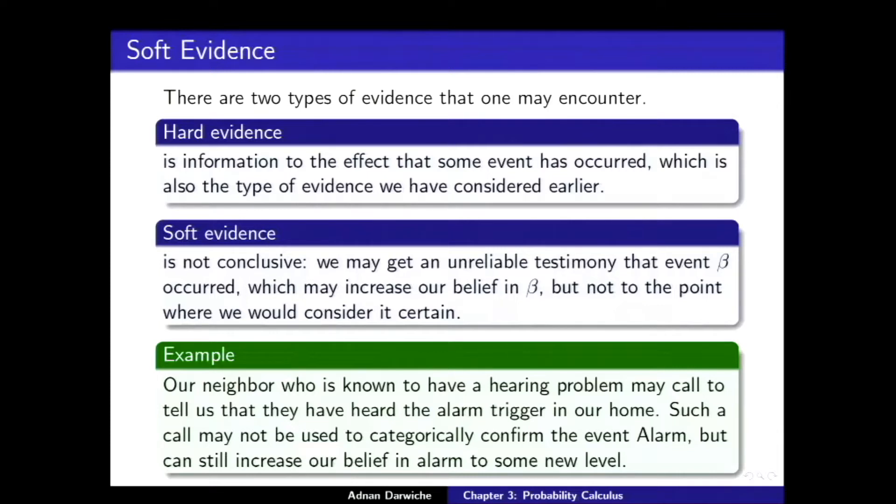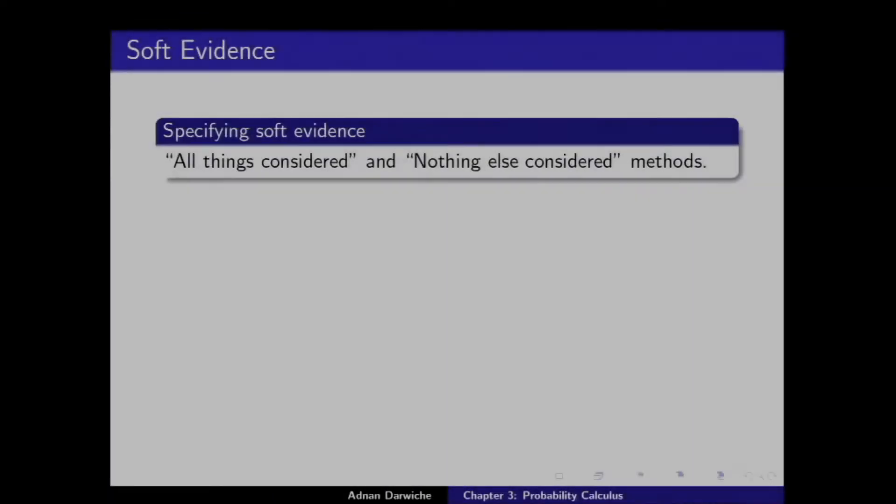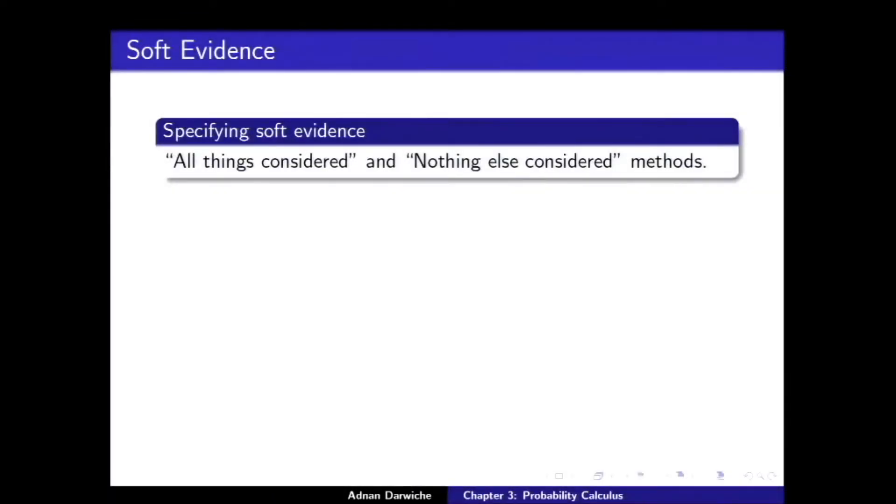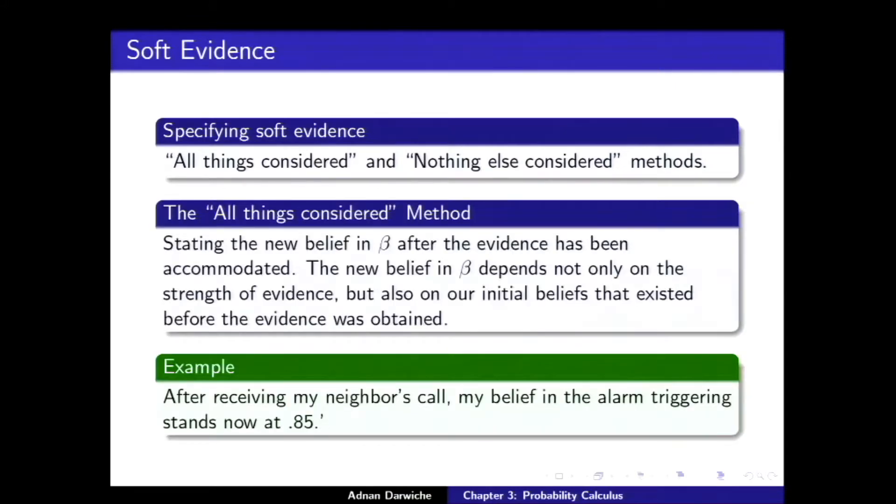So, here's soft evidence. And the two methods have their names. Actually, Udapur gave these two names to them. One of them is called All Things Considered and the Nothing Else Considered. All Things Considered is traditional. In his original book, he talked about the Nothing Else Considered. At that time, it was called Virtual Evidence Method. The treatment that we're giving here is actually relatively recent, like last decade.